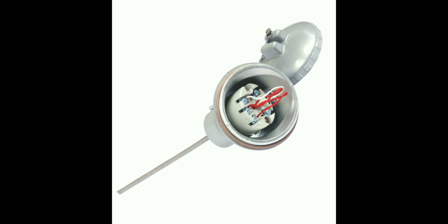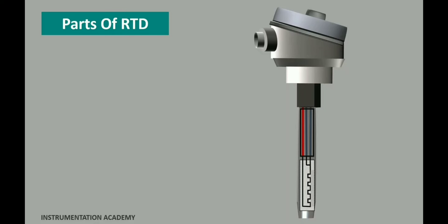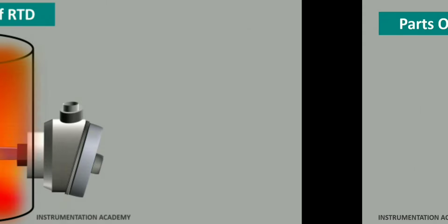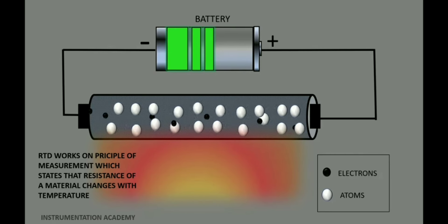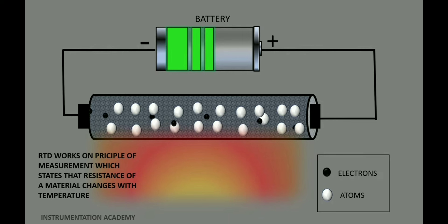It converts the resistance change of an RTD sensor into a standardized output signal for monitoring and control purposes. Let us look at the working of RTD transmitter. The RTD sensor, typically made up of platinum, exhibits a linear change in resistance with temperature. As the temperature changes, the resistance of the RTD sensor changes proportionally.